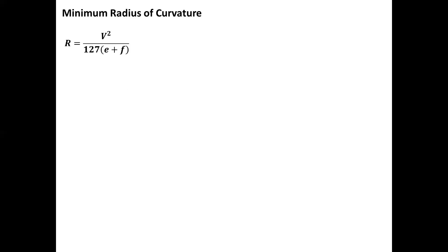As a continuation on minimum radius of curvature, we have the given formula to calculate the value of r: r is equal to V squared, all over 127 times (e plus f). And then the formula for finding the degree of curvature D in degrees is: D equals 1145.916 all over r. This is also what we call the arc basis used when studying the simple curve concept.